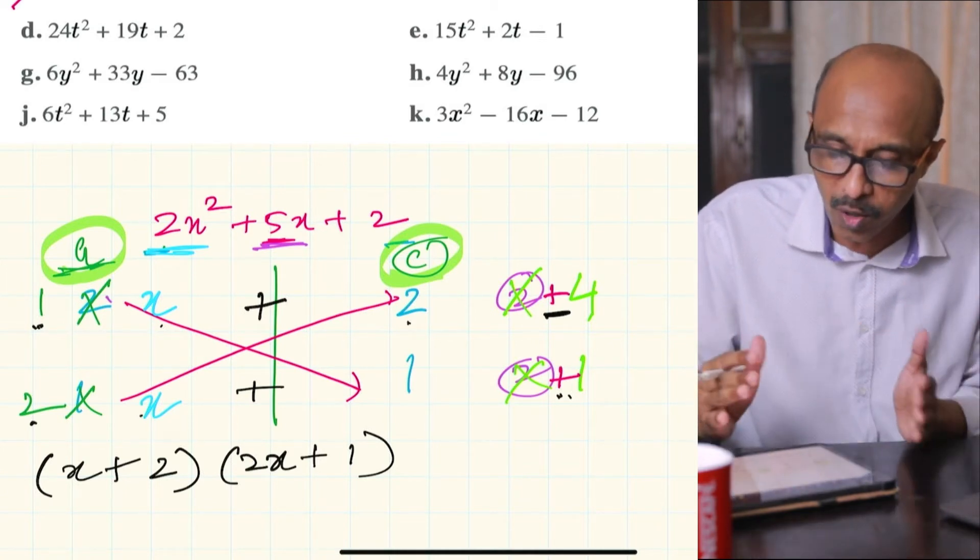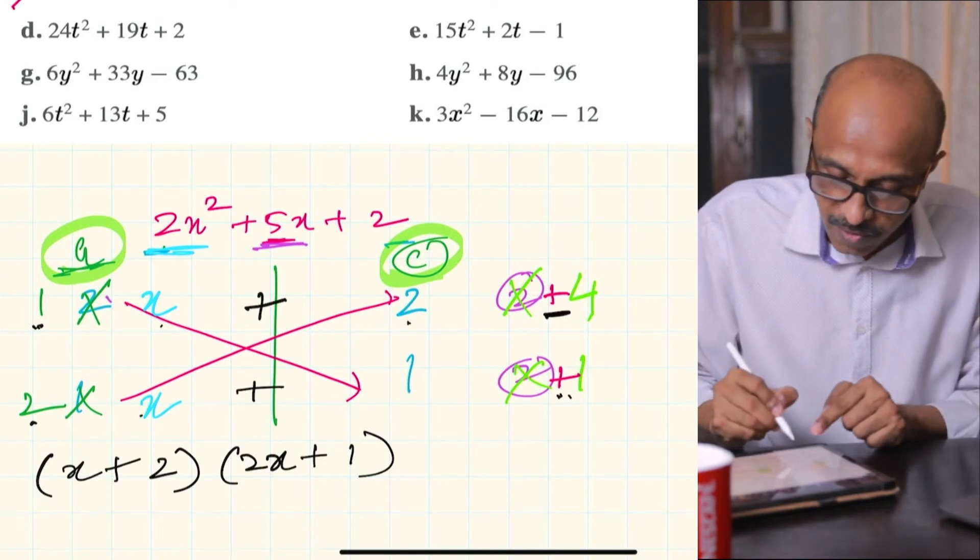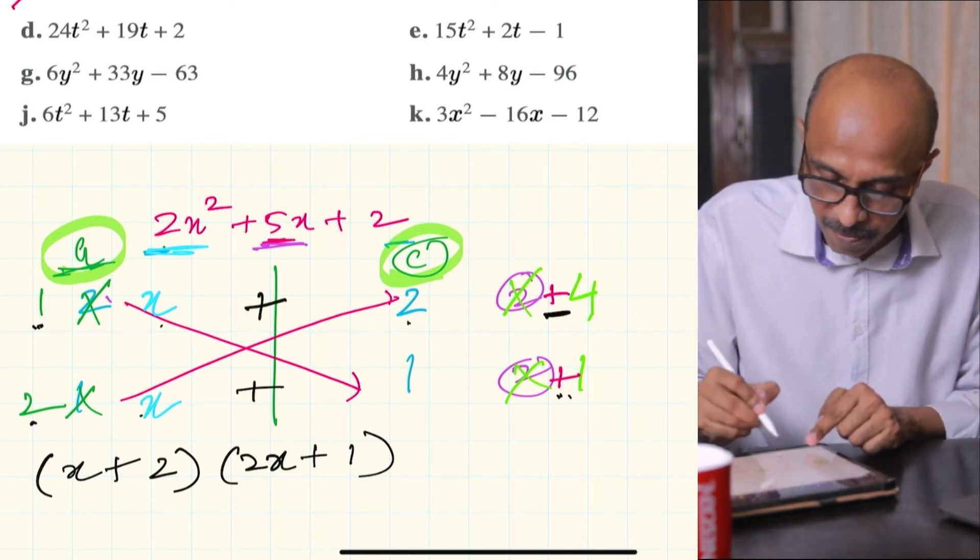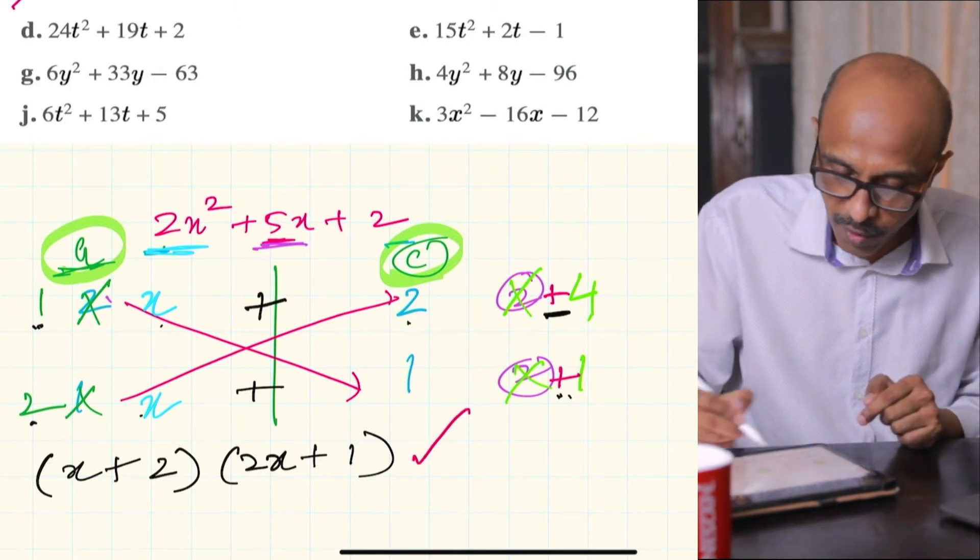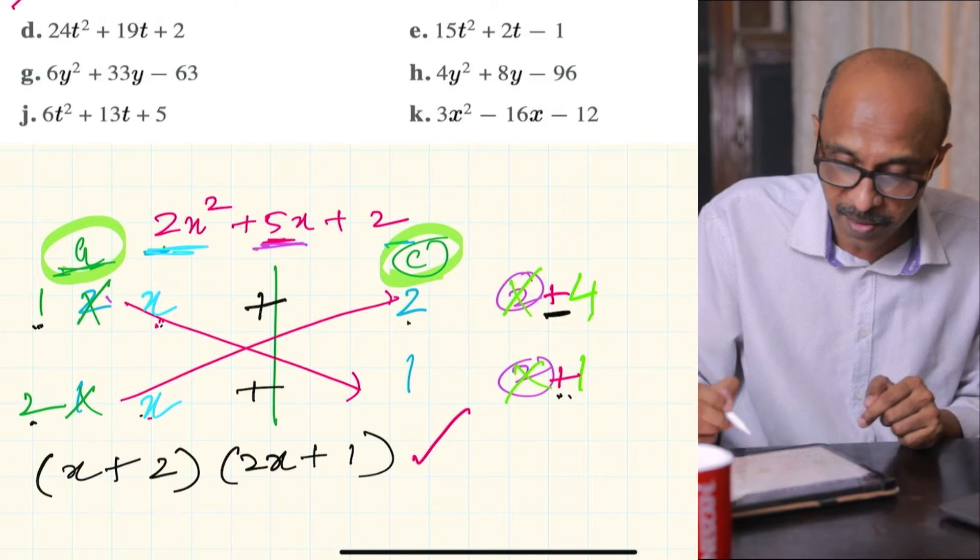Initially if you're practicing, go slow, get it right first. Check your multiplication, this is 2x², 4x, 1x and 2, so this is correct. Don't forget this x has to be there. Let's try the next question now.